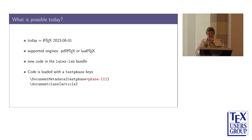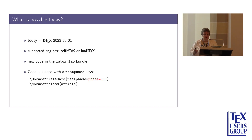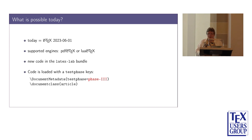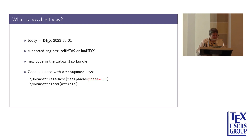Currently we have phase three. You have to load it before the document class, and there's an explicit trigger — if you want tagging, you have to tell the document by using the document metadata command. Paragraphs and links already worked last year, implemented with new paragraph hooks, and works fine. The main problem is ensuring that tagging is balanced — you need a similar number of opening and closing paragraph tags — which can sometimes fail with low-level coding, but it's not much of a problem.